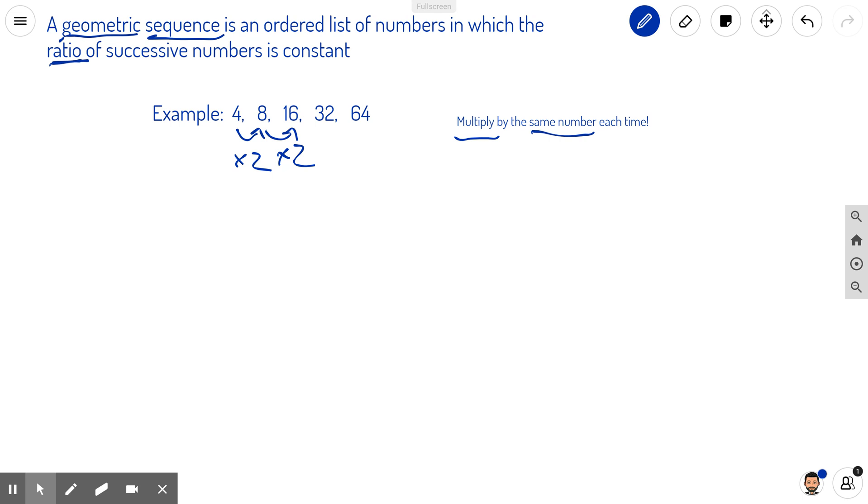So just like an arithmetic sequence could be either adding or subtracting, effectively, geometric can be either multiplying or dividing. So for example, if you had something like this: 27, then 9, then 3.